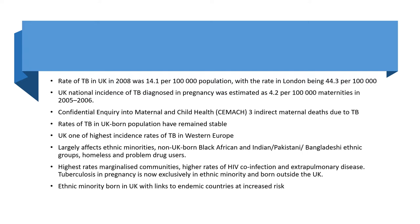The rate of TB in the UK in 2008 was 14.1 per 100,000 population, while the rate in London was 44.3 per 100,000. The national incidence of TB diagnosed in pregnancy was estimated at 4.2 per 100,000 maternities in 2005 and 2006. The Confidential Inquiry into Maternal and Child Health revealed three indirect maternal deaths due to TB. The rates of TB in the UK-born population have remained stable, and the UK has the highest incidence rates of TB in Western Europe.